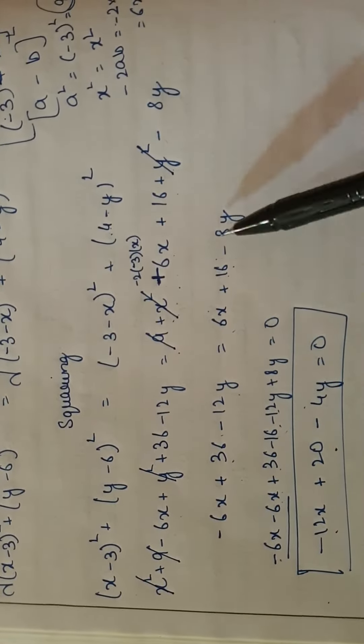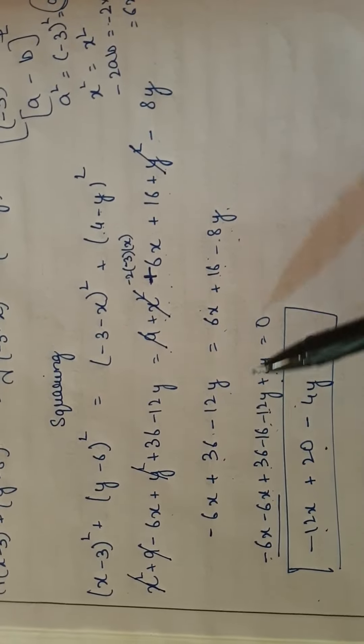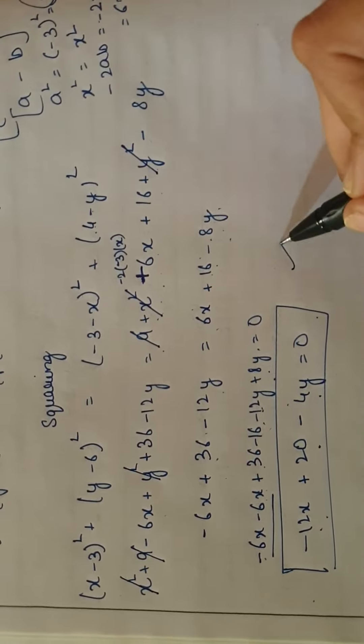Minus 12y and here minus 8y. These add together: -12 + 8 = -4. The relation is formed, this is the answer.